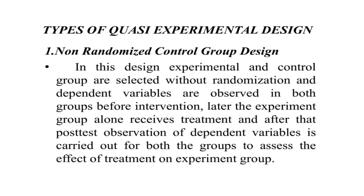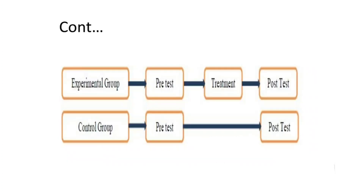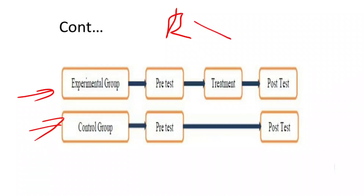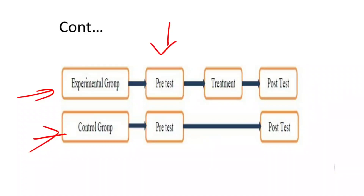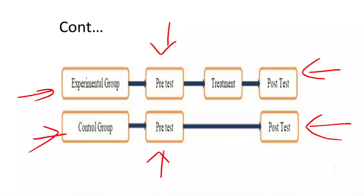The Experimental Group alone receives the treatment, and after that, Post-Test observation of the Dependent Variable is carried out in both the Experimental Group and Control Group. This is better represented diagrammatically: no randomization is applied; both groups receive a Pre-Test; only the Experimental Group receives the Intervention; and Post-Test is assessed in both groups. This allows you to determine what effect the treatment has produced on the Experimental Group.